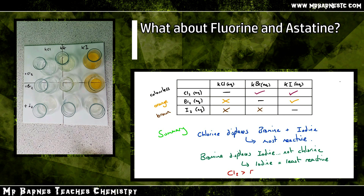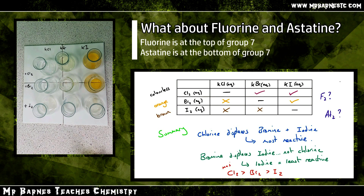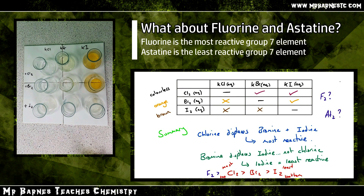This also tells us about the reactivity of fluorine and astatine, which we haven't looked at today. Fluorine sits higher than chlorine on the periodic table, so we can predict that it is the most reactive — and it is; fluorine is the most reactive element. Astatine sits at the bottom and is therefore the least reactive of those five halogens.